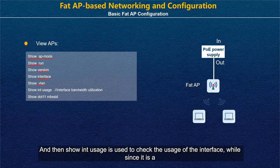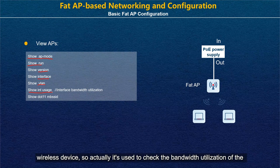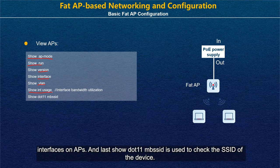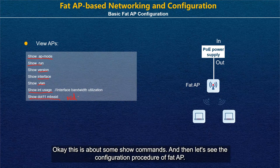'Show int usage' checks the interface bandwidth utilization of interfaces on the AP. Since it is a wireless device, it is used to check the interface bandwidth utilization. Finally, 'show .11nb SSID' is used to check the SSID of the device.